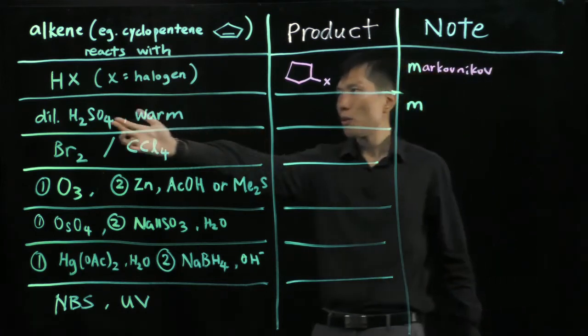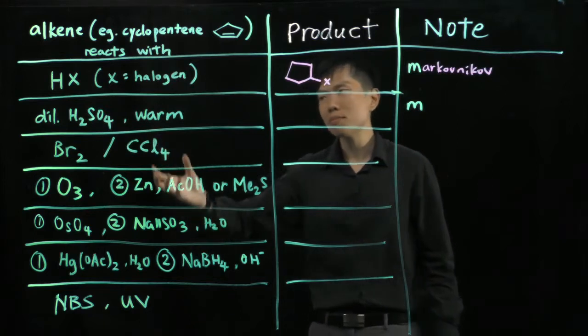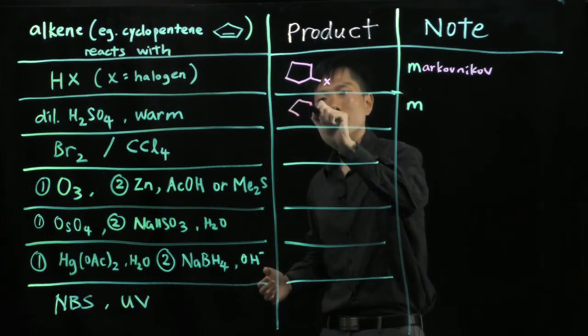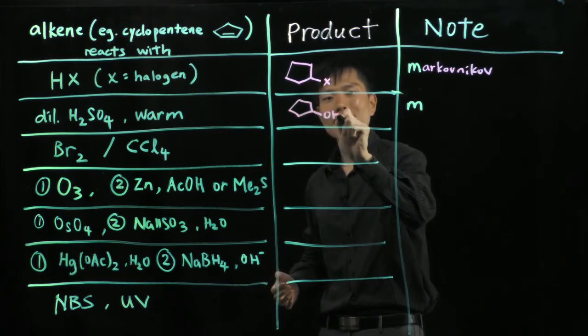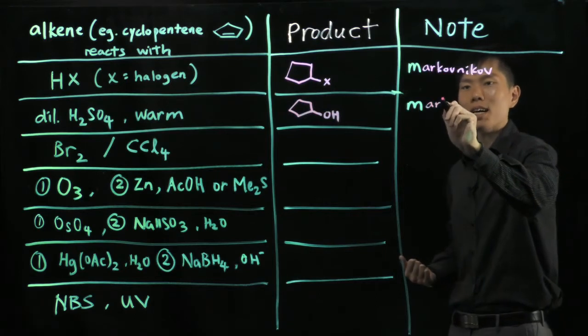Now the next case, when I react cyclopentene with dilute sulfuric acid and warm, basically you are going to have an alcohol. So a cyclopentanol. Again this follows the Markovnikov rule.